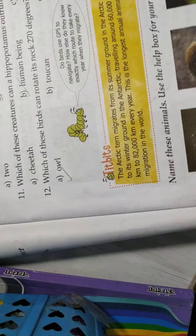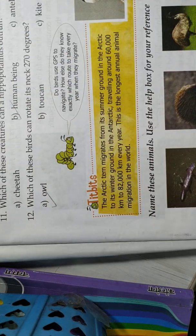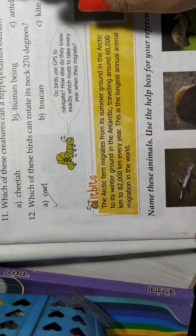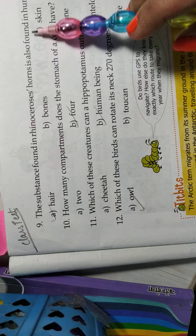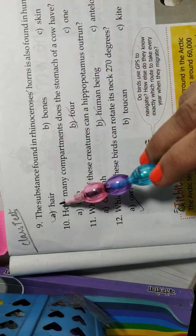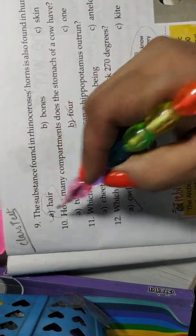Now, we will come to the ninth question. The substance found in the rhinoceros horns is also found in human. The substance found in rhinoceros horns is also found in human. So which thing is common in rhinoceros and humans? Hair, bone, skin. Hair. Hair is the correct option.